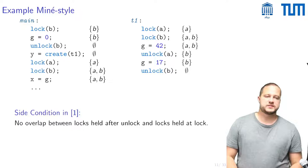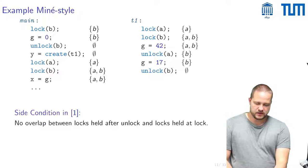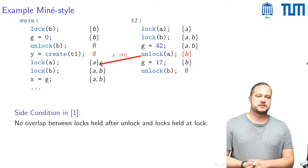What does this look like in our example? Well for the simple setting the side condition boils down to checking that there's no overlap between the locks held after an unlock and the locks held at the corresponding lock.